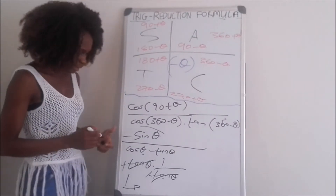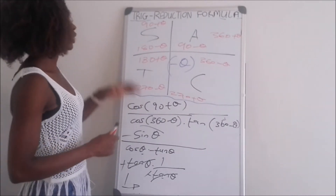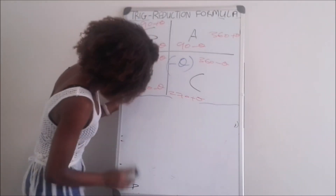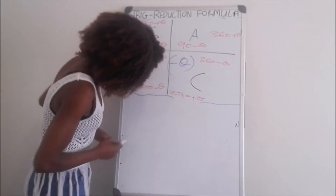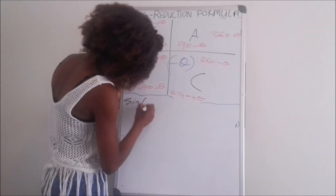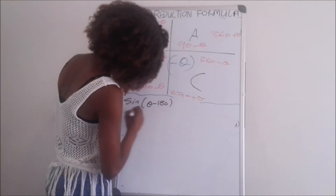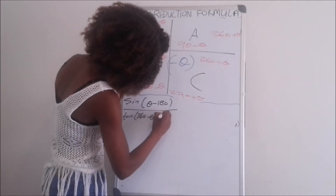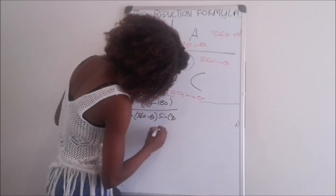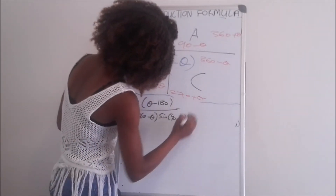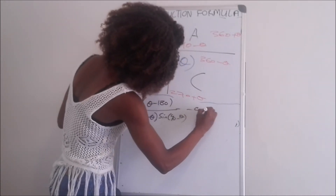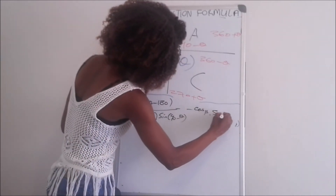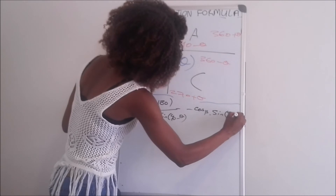I hope you understood that example. Let's do another one. The expression is: sine(theta minus 180) divided by tan(360 minus theta), multiplied by sine(90 minus theta) — all of this minus sine(cos beta), multiplied by sine(90 minus beta).